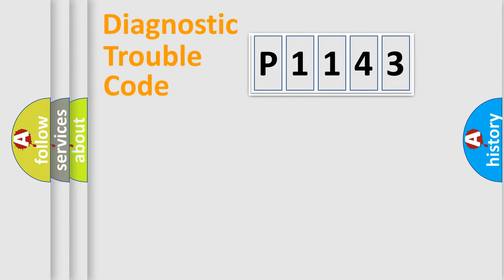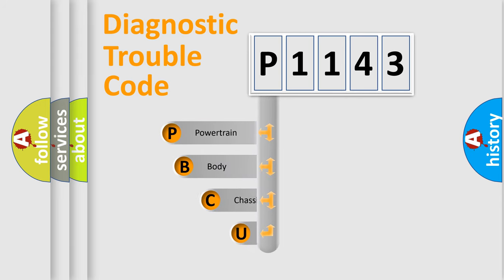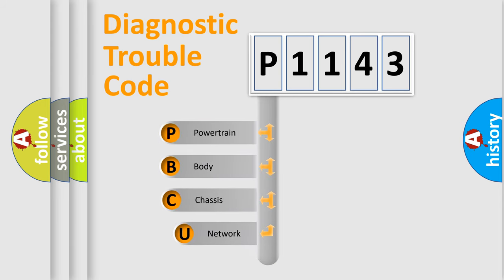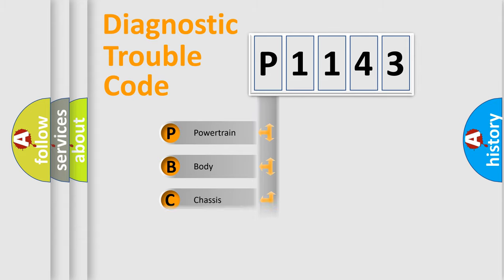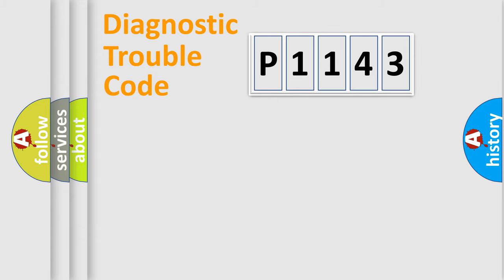Let's do this. First, let's look at the history of diagnostic fault code composition according to the OBD2 protocol, which is unified for all automakers since 2000. We divide the electric system of the automobile into four basic units: Powertrain, Body, Chassis, and Network.